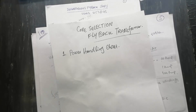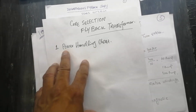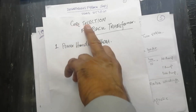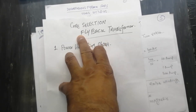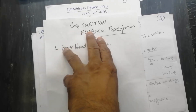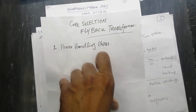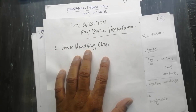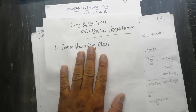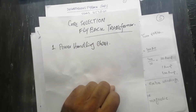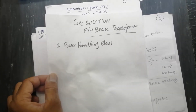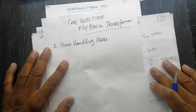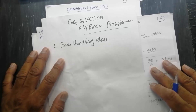For any flyback transformer, the most basic and important parameter is core selection. Magnetic core selection is the hardest point in winding the transformer. If we select a core perfectly, our transformer will be perfect, and when the transformer is perfect, the circuit will work properly. Let us see how we can select a core for a flyback transformer.